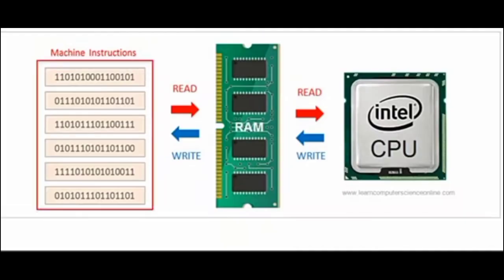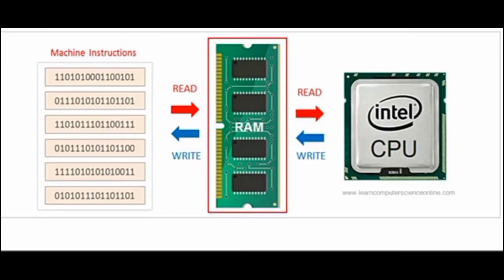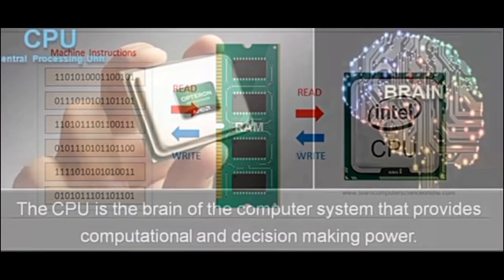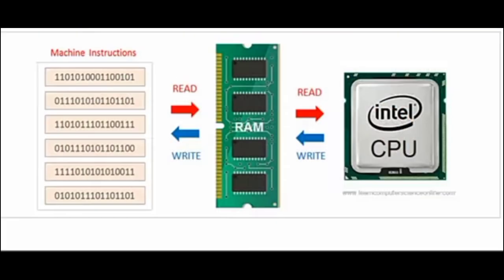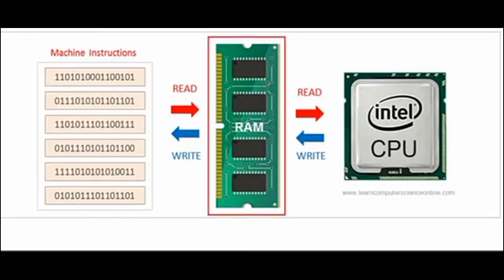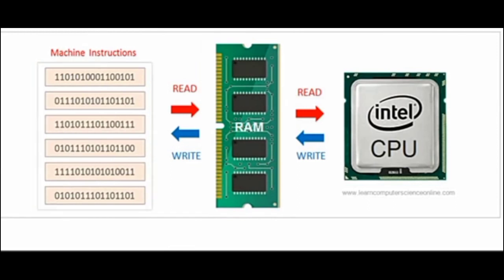Software is the instructions that tells a computer what to do. These program instructions are loaded into the main memory of the computer to start the program execution. The microprocessor, also called the central processing unit or CPU, is the brain of the computer and collects these program instructions from the main memory, which is the RAM.